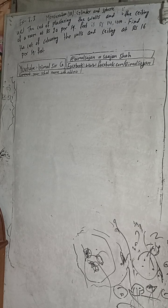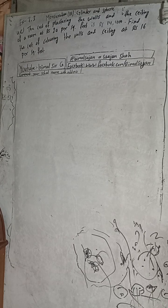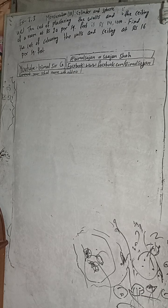Hi class 9 and 10 students, welcome back to Bimbal Sarji YouTube channel. This is question number 4C, exercise 7.3, mensuration third part — cylinder and sphere — class 9 compulsory maths. In the Bimbal Sarji YouTube channel, check the playlist. Here you will get class 9 and 10 solutions of optional maths, compulsory maths, and science as well.